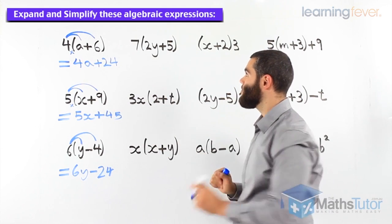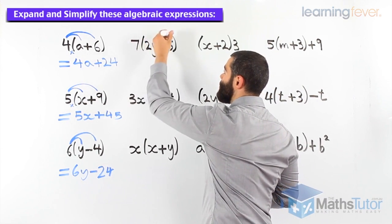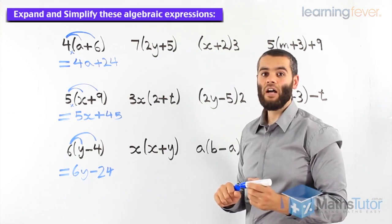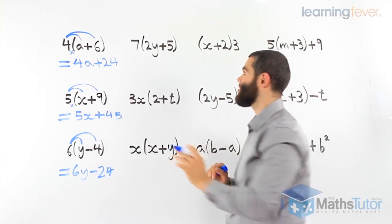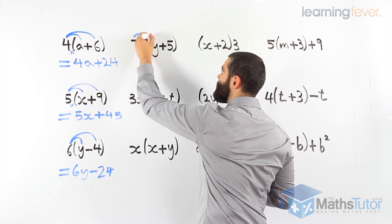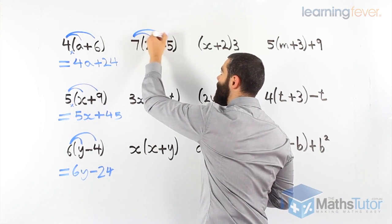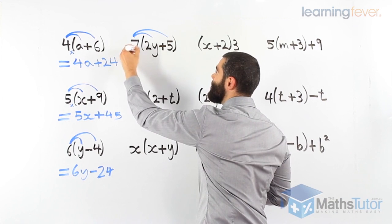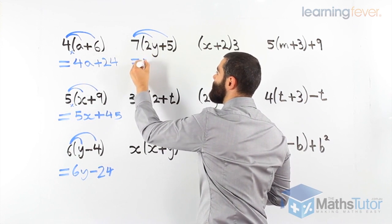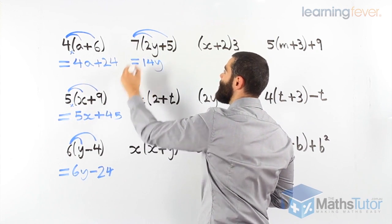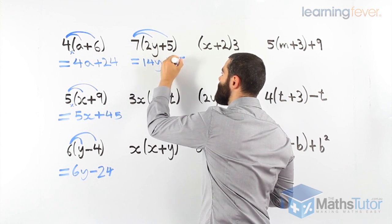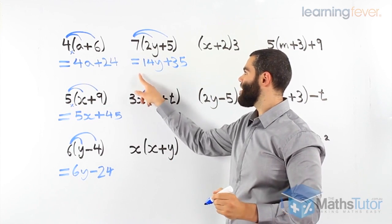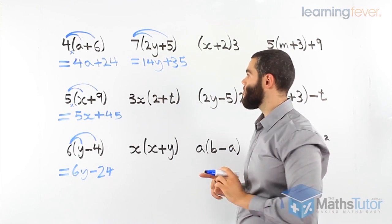Here, we have seven, and in brackets, two y plus five. We know it means seven times everything inside the brackets. Seven times two y, seven times five. Seven times two y is fourteen y. Seven times five is thirty-five. That's our final answer. No like terms. We stop there.